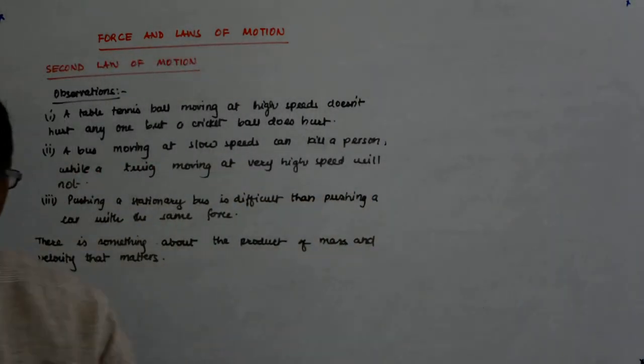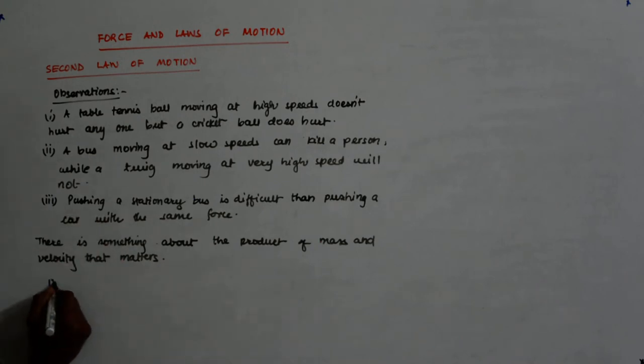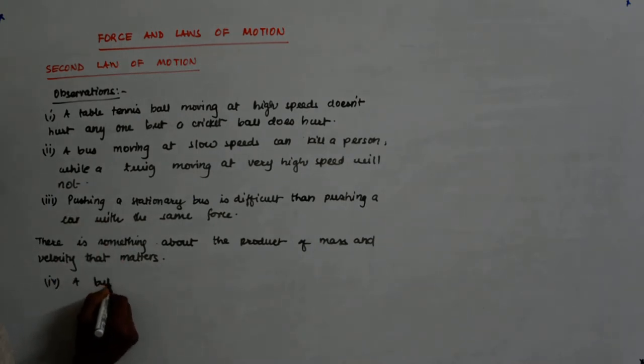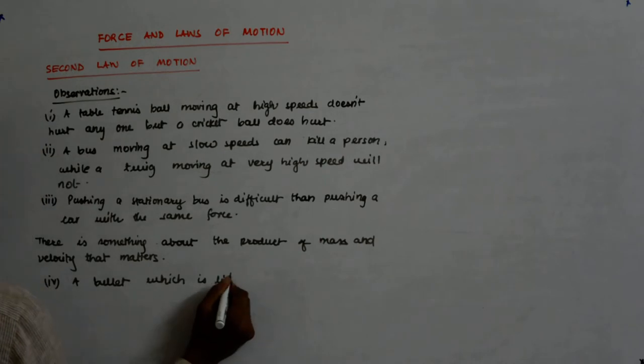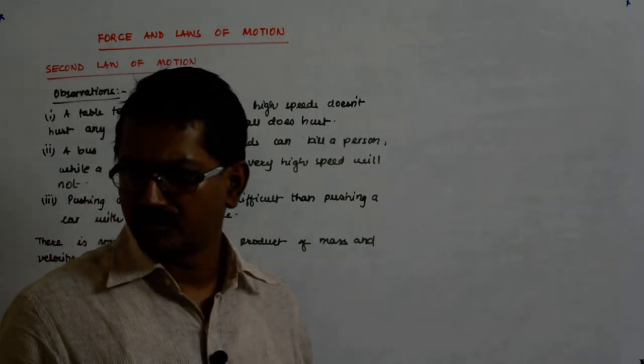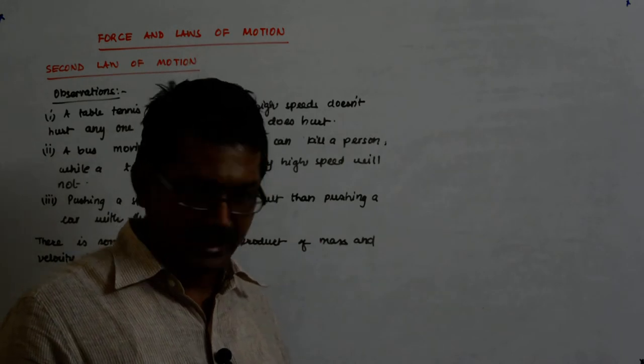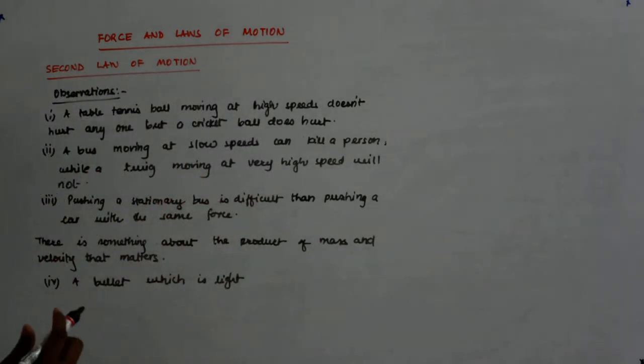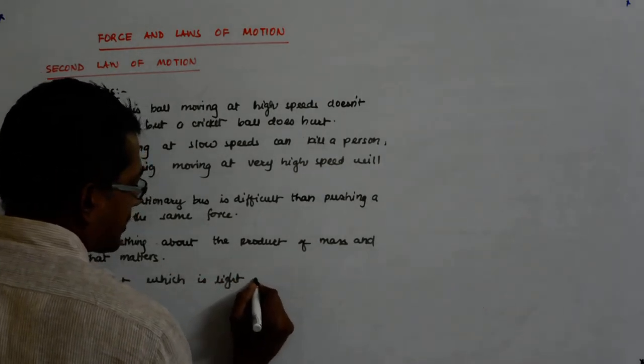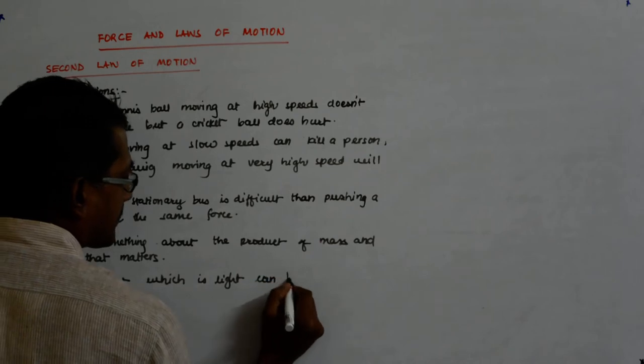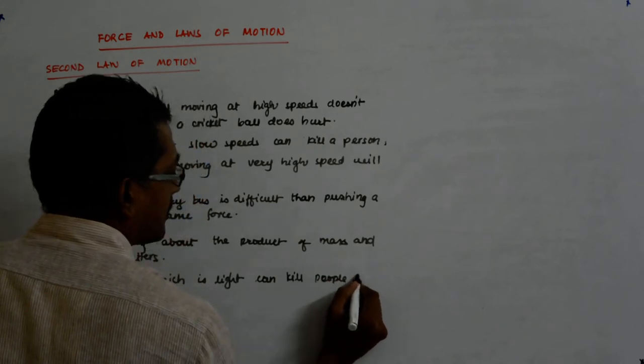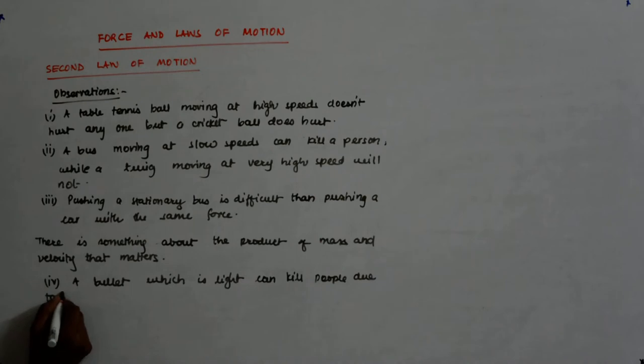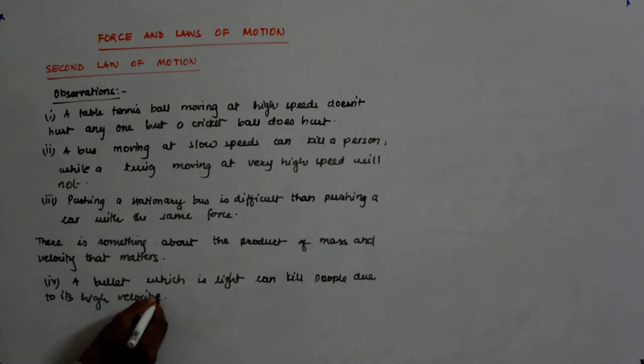Similarly, we can cite another example. A bullet which is light, hardly 20 to 30 grams, is capable of killing people. Why? Because it moves at such a high speed. A bullet which is light can kill people due to its high velocity.